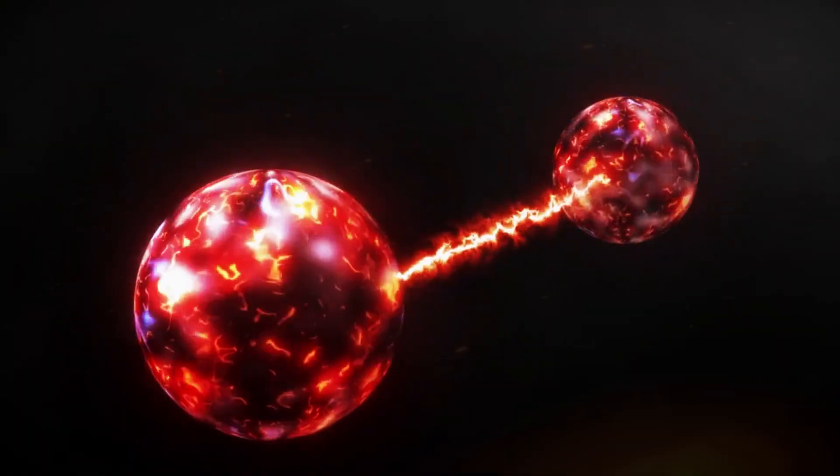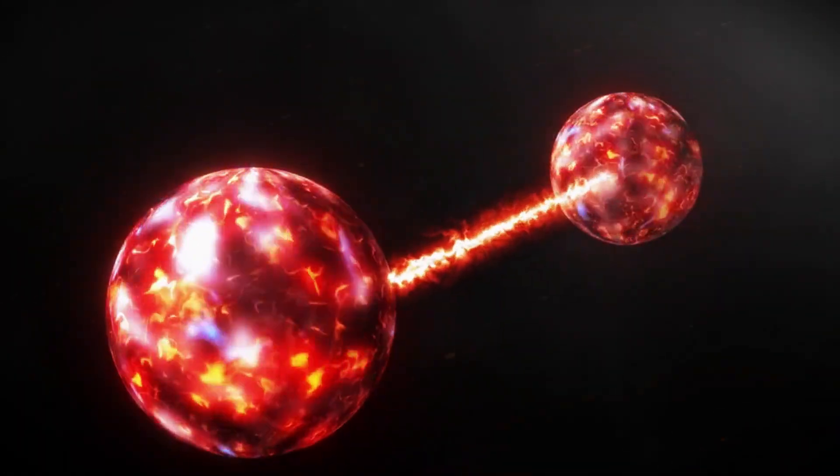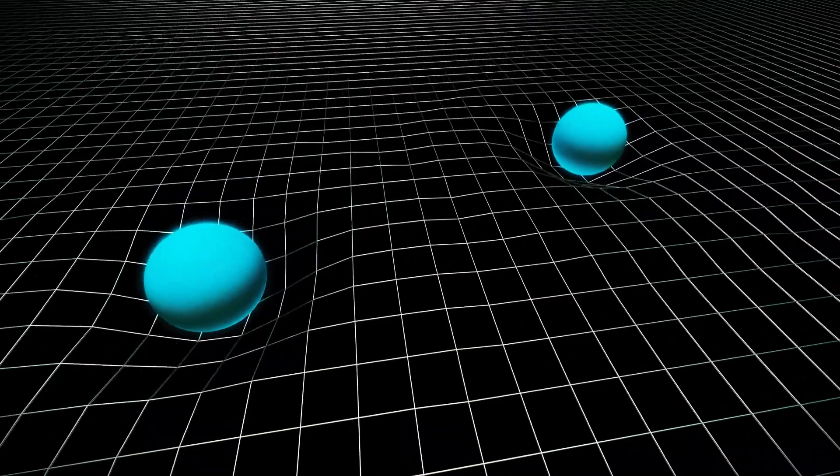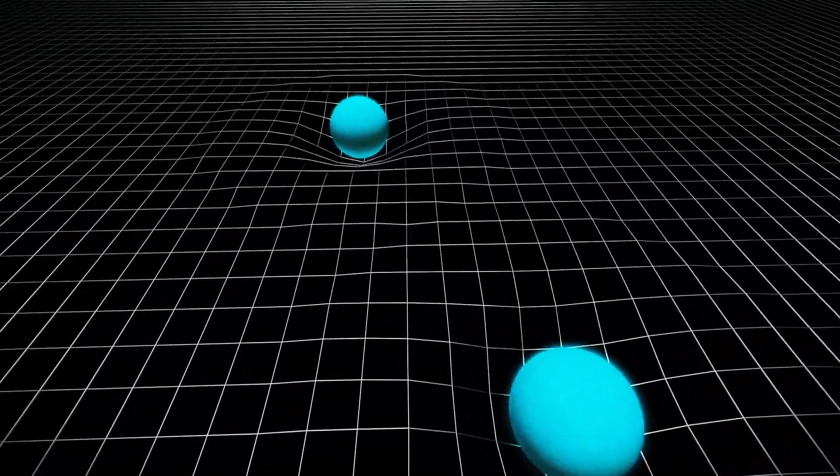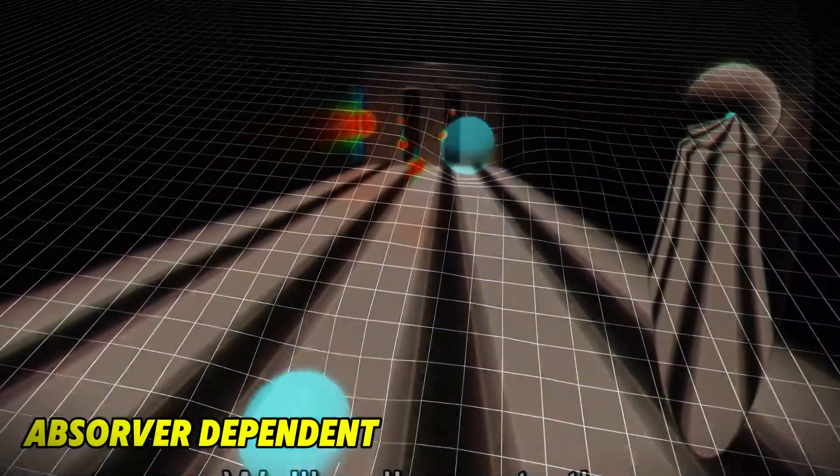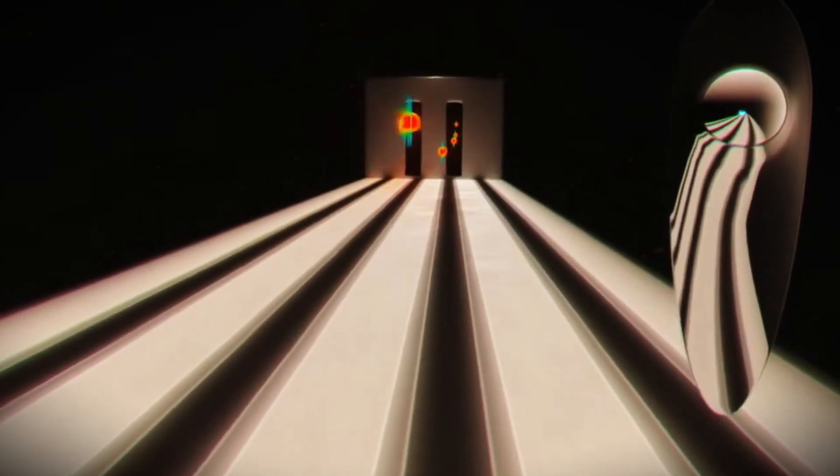To understand why, we need to delve into one of the most debated interpretations of quantum mechanics: the idea that reality is observer-dependent. This stems from the famous double-slit experiment. When particles like electrons are shot at a barrier with two slits, they behave like waves, creating an interference pattern on a screen behind the barrier.